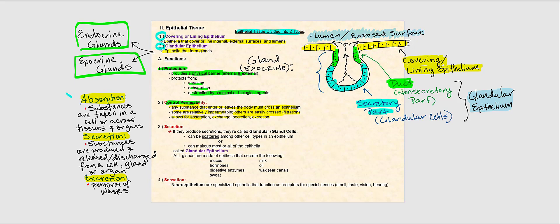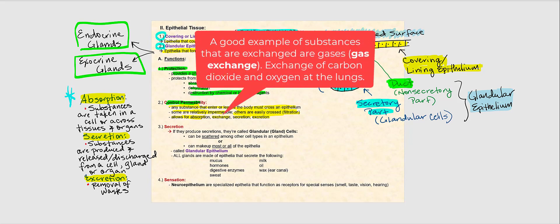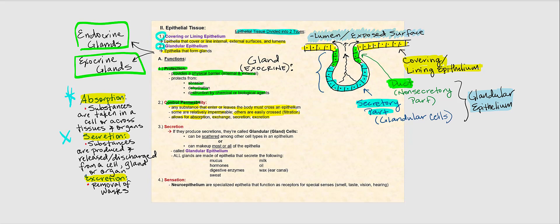Absorption refers to substances taken into the cell, or that potentially cross tissues or organs. Exchange is the exchanging of substances — some cross into tissues and organs while others go the opposite direction. Secretion involves substances produced and released or discharged from a cell, organ, or gland. Excretion means removal of wastes, such as urine or fecal matter.